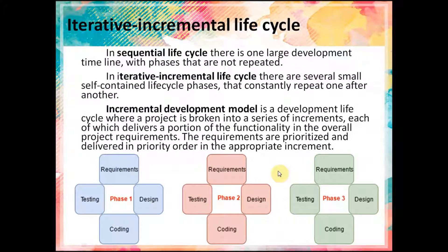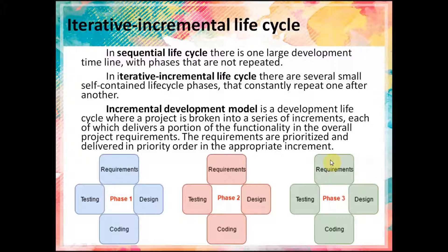With iterative or incremental life cycle, the functionality would be divided into several phases. In the first phase, the user would be able to send only text, and after this phase the client could see the working functionality of sending text. The next phase adds sending pictures, so the user can send photos. The final phase adds the functionality of sending videos.